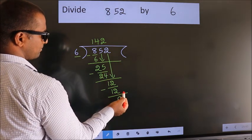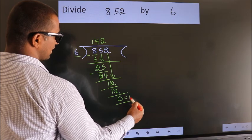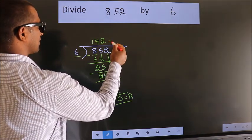No more numbers to bring it down. So, we stop here. This is our remainder. This is our quotient.